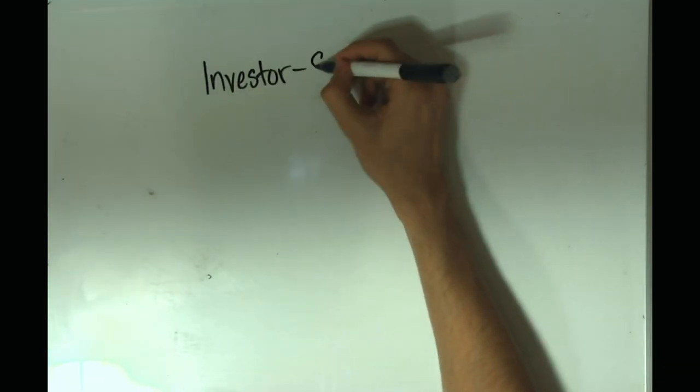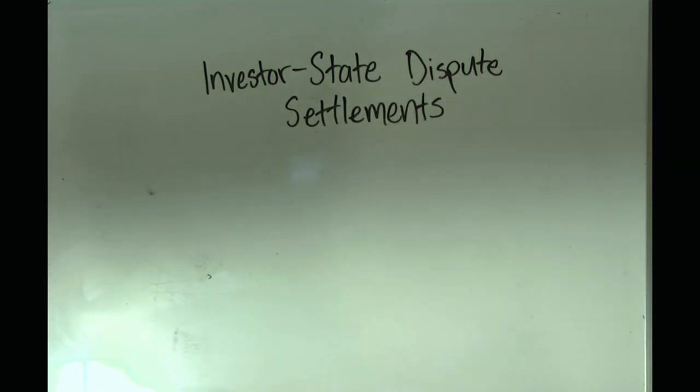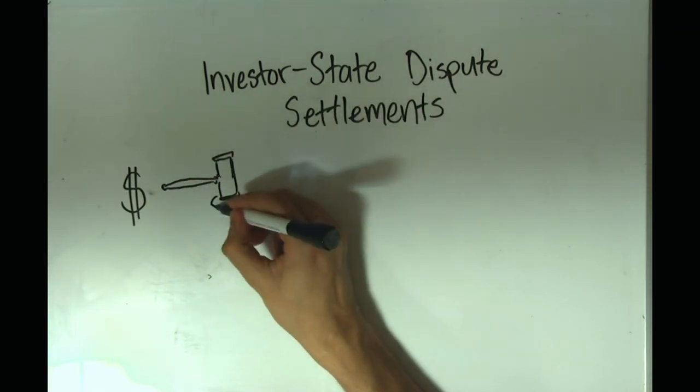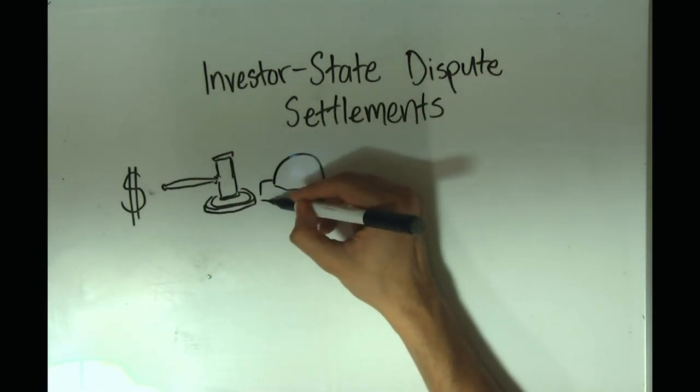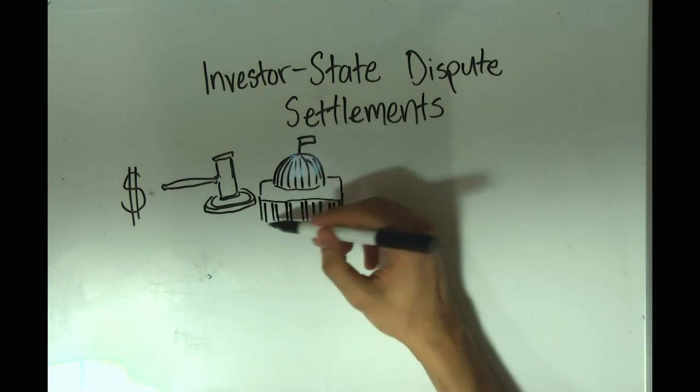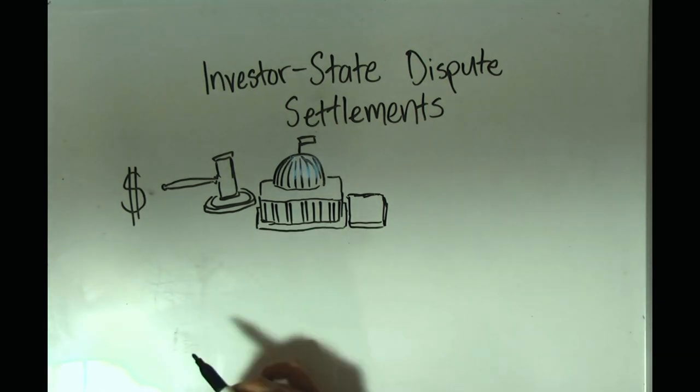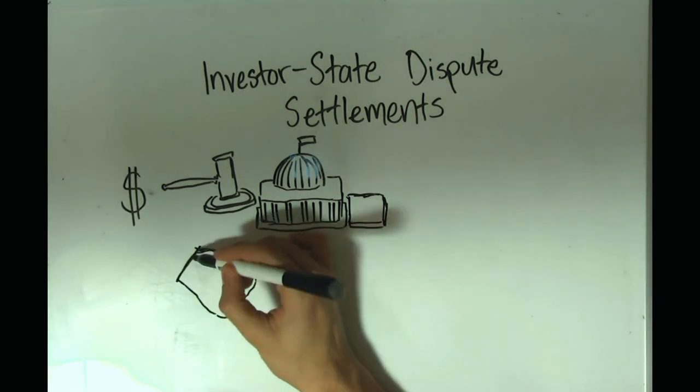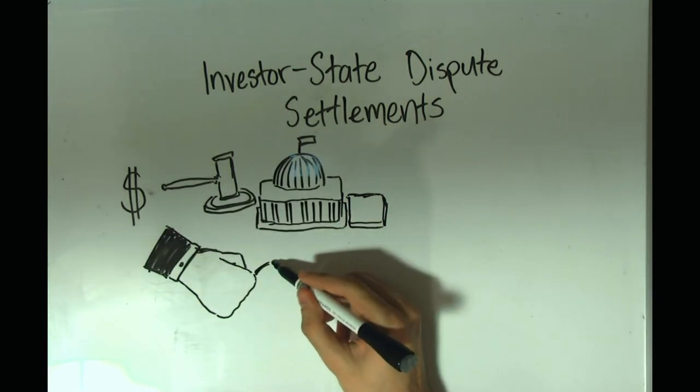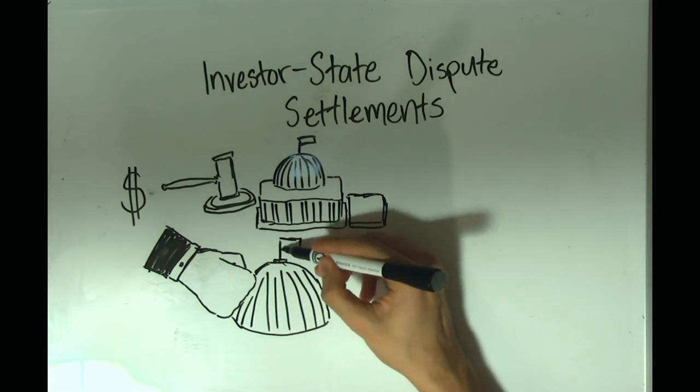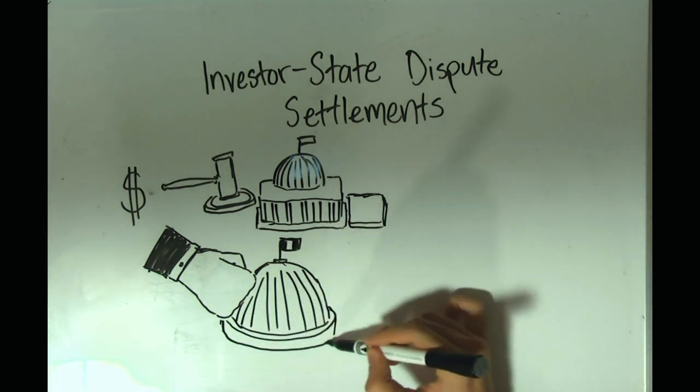The third problem is something called Investor State Dispute Settlements, or ISDSs. What these do is allow foreign businesses to sue governments if there are ever any disputes during trade. In theory, this gives businesses protection from nationalization of industries. In practice, this gives multinational corporations the power to subject entire governments to conditions favorable for their own profit. There are many cases of this happening worldwide.